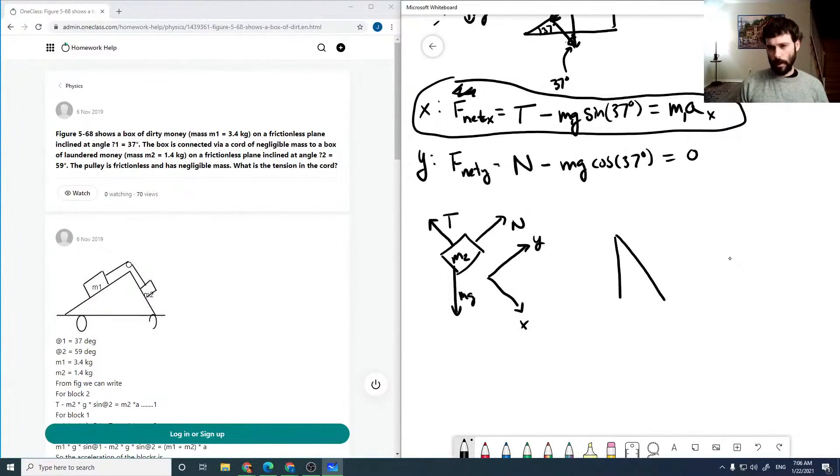Again, sketching out our triangle here, this is a 59 degree angle. Our mg force is straight down, which if we draw our similar triangle, that's our 59 degree angle. Now we can see that with our axis system drawn up top, our mg sine of 59 is going to be in the positive direction and our mg cosine of 59 is going to be still in the negative direction.